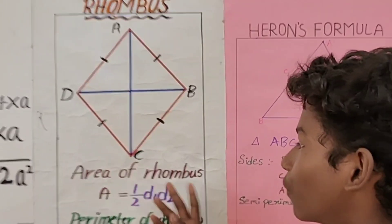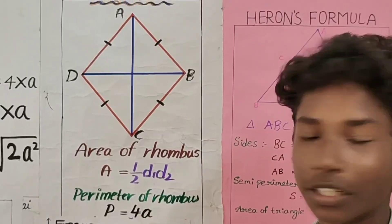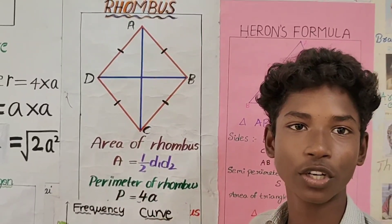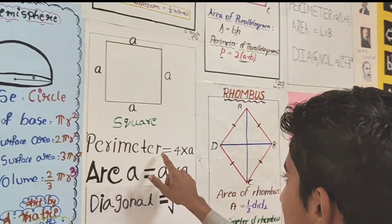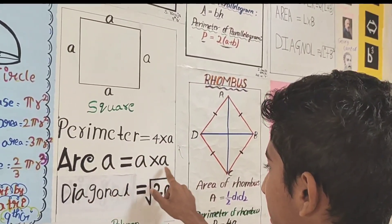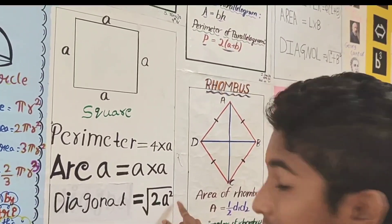This is a rhombus. Area of rhombus A is equal to half into D1 into D2. Perimeter of rhombus P is equal to 4A. This is a square. Two dimensions figure. All sides are equal. Perimeter is equal to 4A. Area is equal to A into A. Diagonal is equal to root 2 A square.